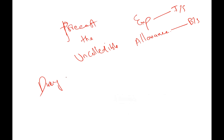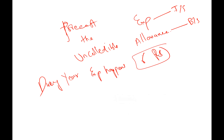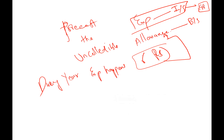Now during the year, what happens? An expense happens — 6 million RS: our customer is not giving us the amount, 6 million. So this 6 million is going to be charged to the allowance, not the expense, so that our planning — which said expense is going to be 98 million — is not disturbed. We already deducted this expense from our income statement in advance. If we further deduct this expense as well, it would become 104 million and ruin our planning. So we charge it to our allowance; allowance is now 98 minus 6, which leaves 92.